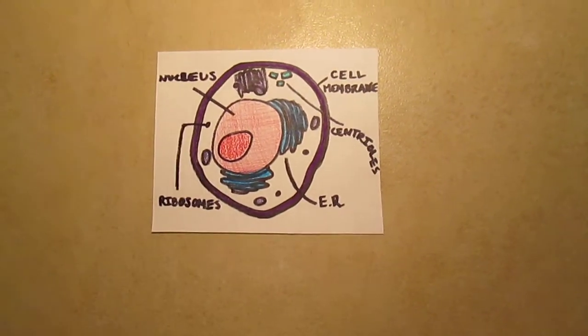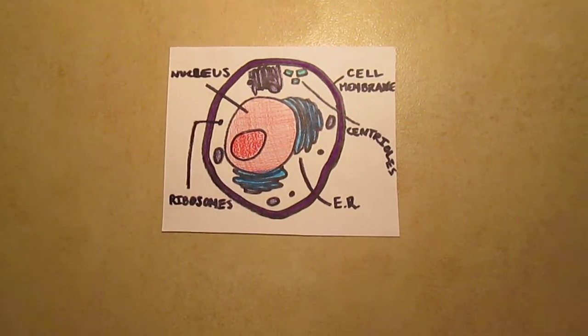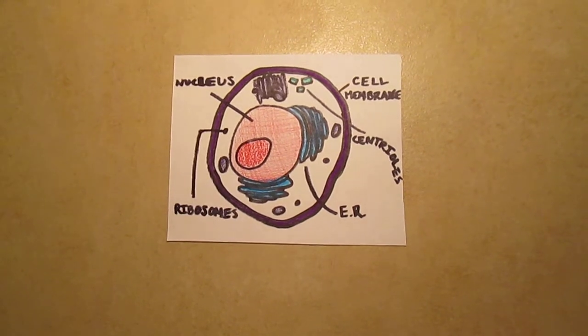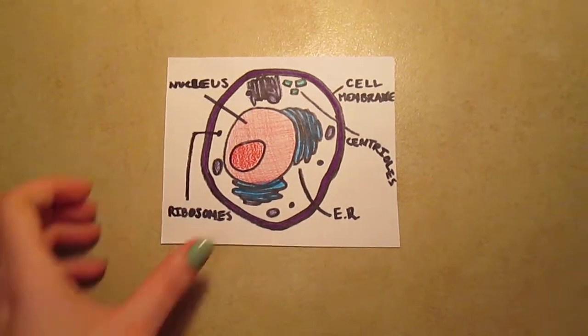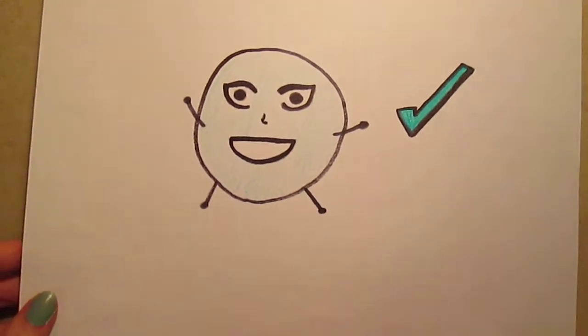Cells have many organelles that carry out the functions of the body. Cells have a cell membrane and centrioles; only plant cells have cell walls. They retain homeostasis on a daily basis.